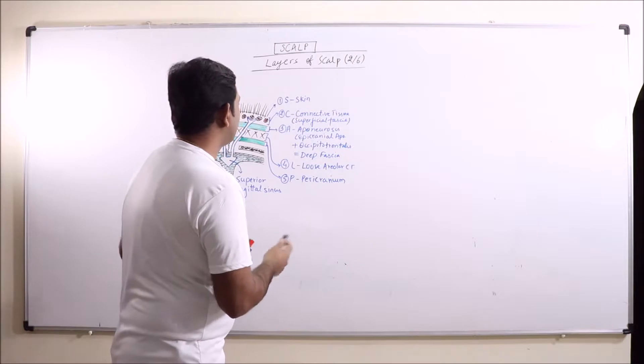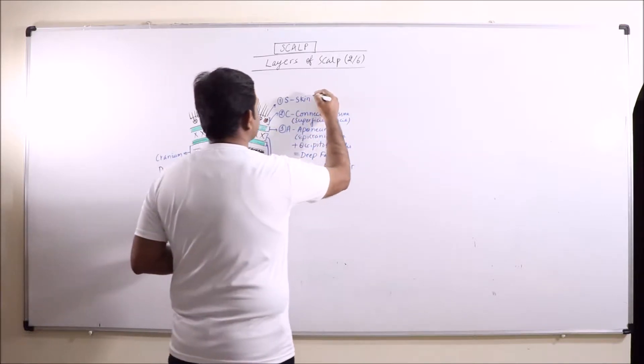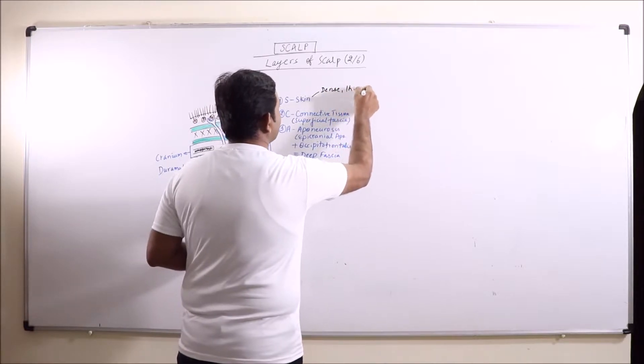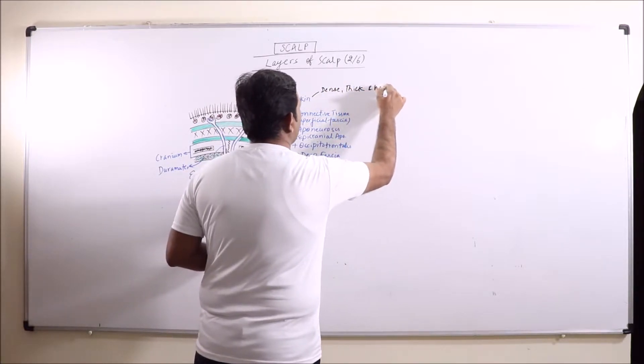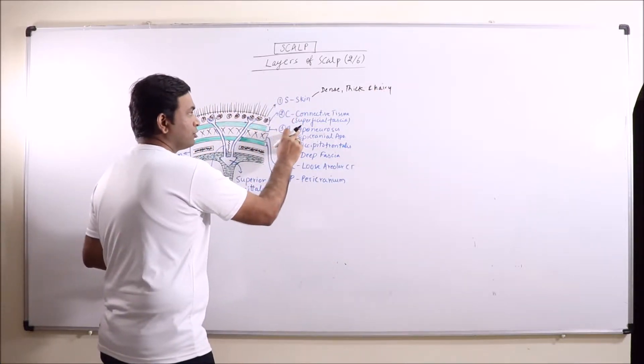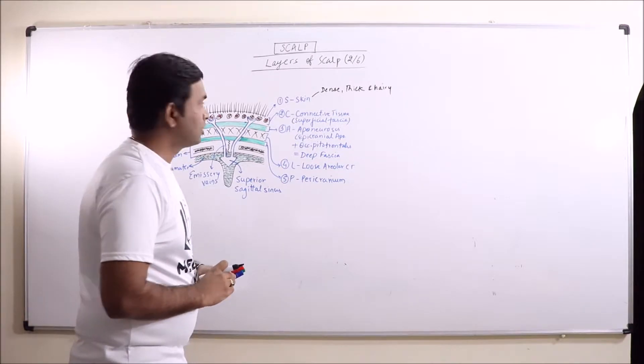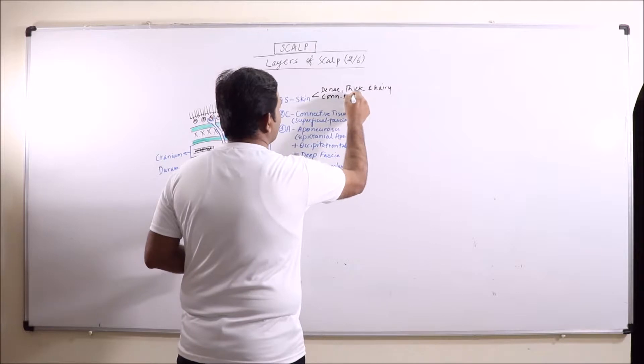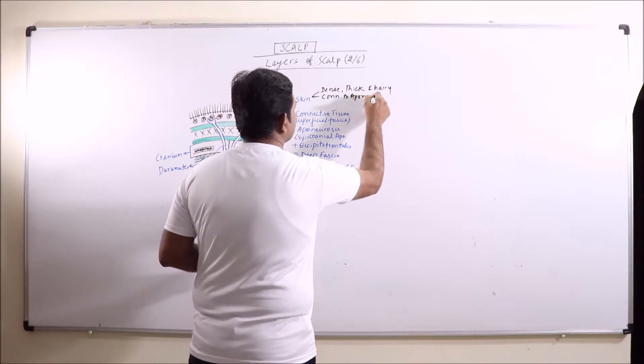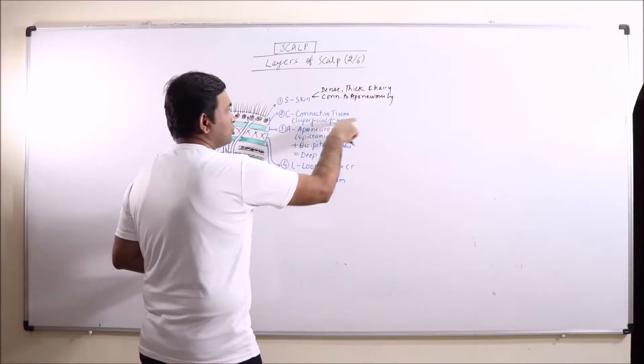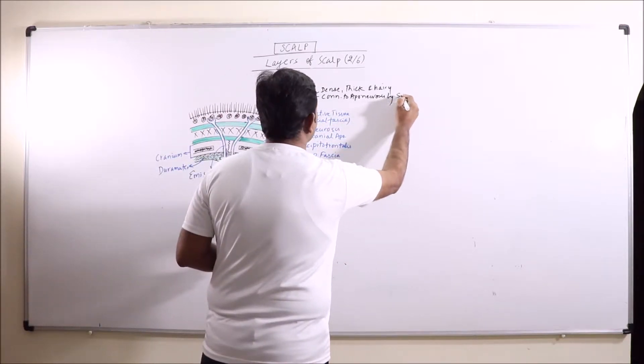The first layer of scalp is the skin. The skin is basically dense, thick and hairy. It is connected to the aponeurosis by connective tissue. It is connected to the aponeurosis by superficial fascia or connective tissue.